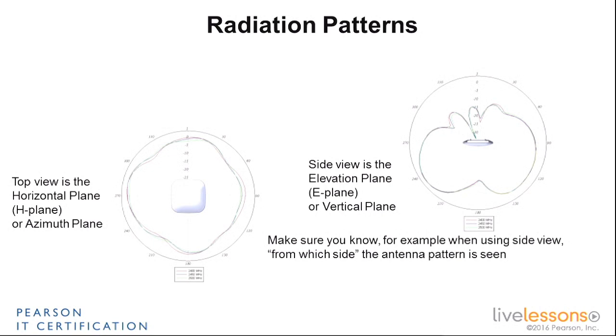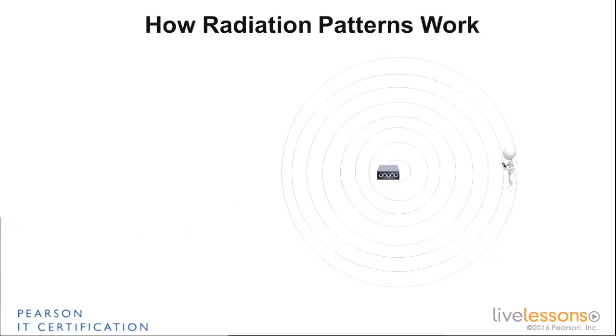It's pretty simple once you understand the principle. But if you look at those numbers, you see on the circle there's minus 5, minus 10, there are angles. What does that mean? The way it's done is that you take an access point and its antenna.